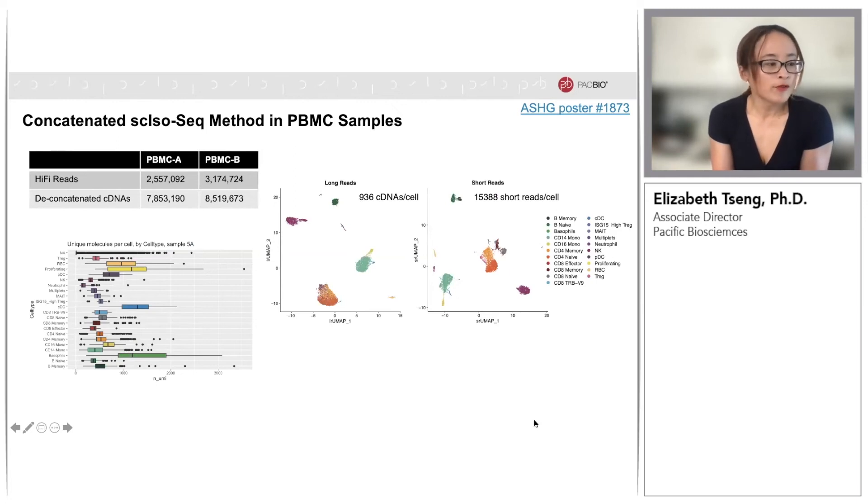Here I'm showing a bit more information from my ASHG poster. Applying the concatenation method to two PBMC-10X samples, we were able to achieve a deconcatenated read depth of seven to eight million full-length reads. We showed that despite having fewer reads per single cell, we were able to recapitulate the same cell types with the much deeper coverage of short reads that only gave you gene-level information.